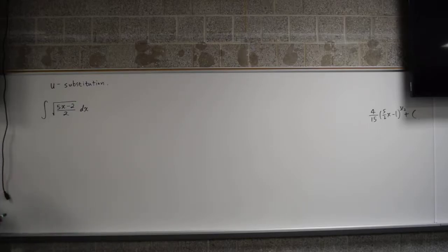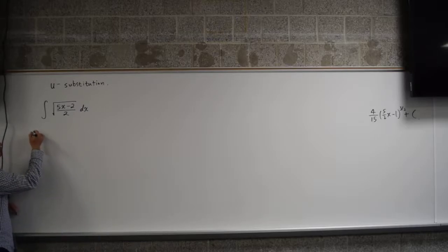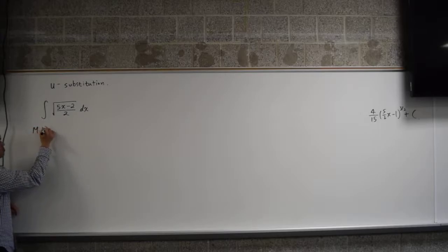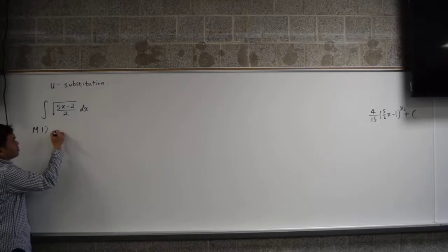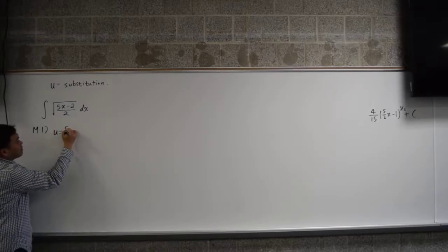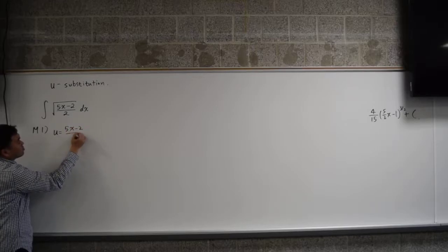So let's do it the u-substitution way. The u-substitution way actually has two different ways. I'm going to show you the first one, and then the second one will be more interesting. The first one is kind of natural. You just say u equals 5x minus 2 over 2.